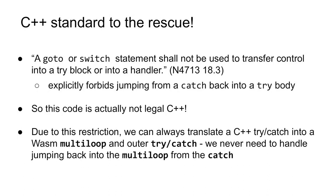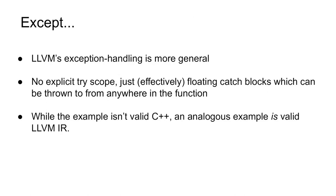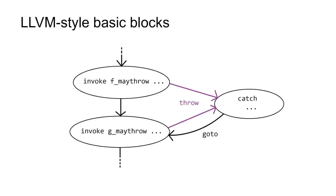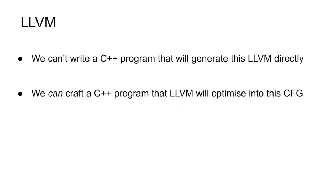So hooray, we've shown that multi-loop works perfectly for our needs, even in the presence of exception handling. Except, LLVM is unfortunately about to rain on our parade. There are a number of different ways to handle exceptions in LLVM, but the one which best fits the WASM backend uses a mechanism which allows effectively free-floating catch blocks to be defined, which may be thrown to from any regular block in the function. Since there is no explicit try-scope, there is no C++-style restriction on where tries can be jumped into. We can construct our problematic example directly in LLVM IR — this is just the same as our illegal C++ example except in control flow graph form, and LLVM actually allows it.